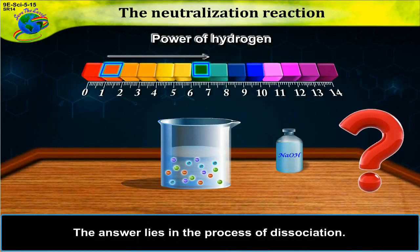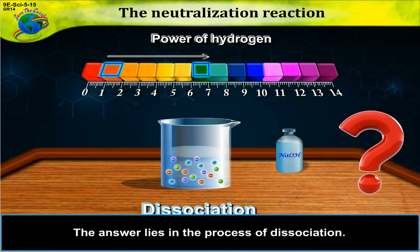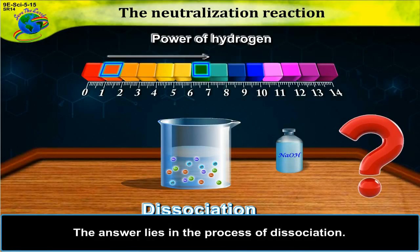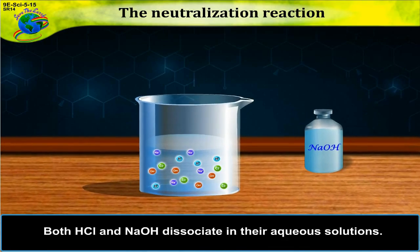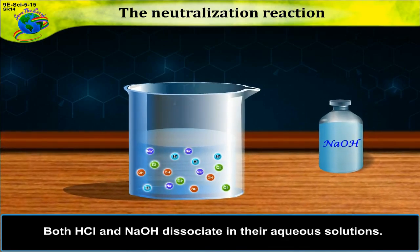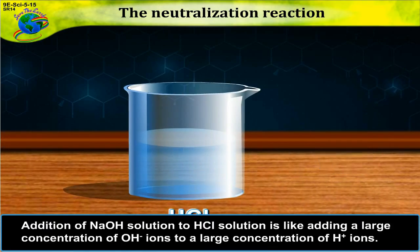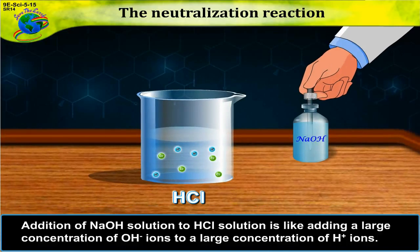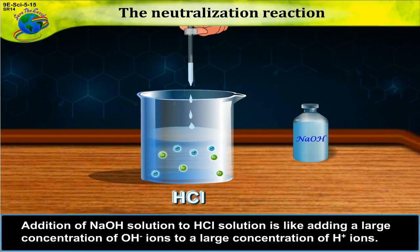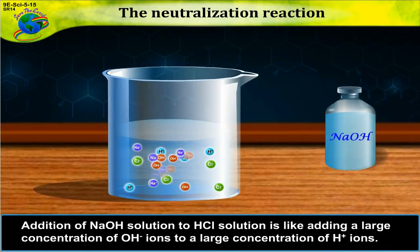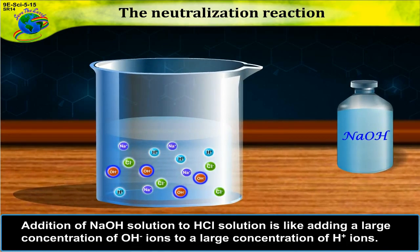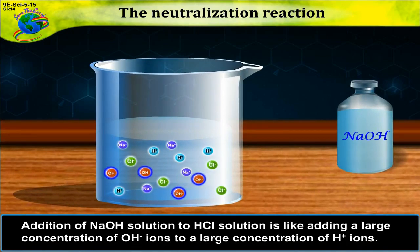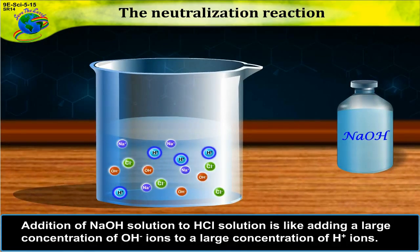The answer lies in the process of dissociation. Both HCl and NaOH dissociate in aqueous solutions. Addition of NaOH solution to HCl solution is like adding a large concentration of OH⁻ ions to a large concentration of H⁺ ions.